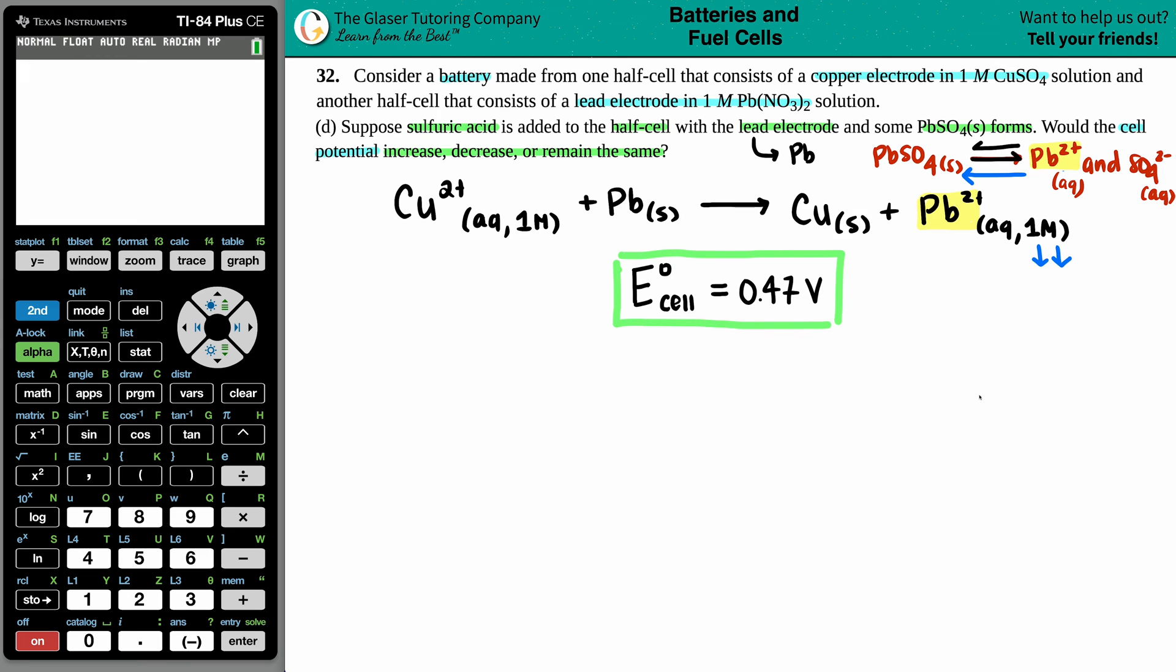But now what does that mean in terms of this? Well, since we're talking about disrupting equilibrium, we're now not in K land, but we're in Q universe, right? Because we can find a Q value.